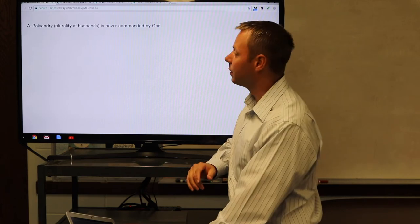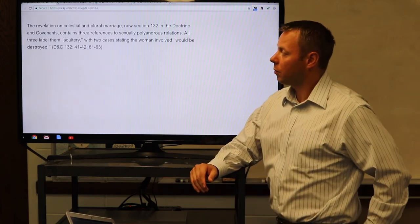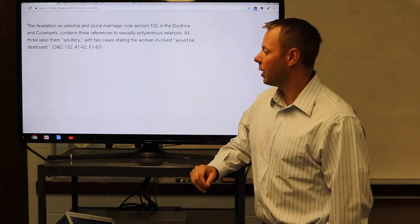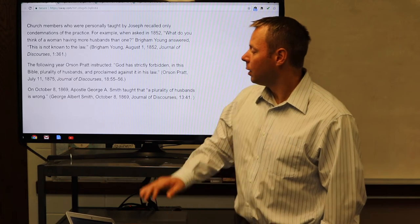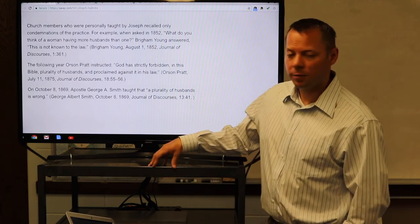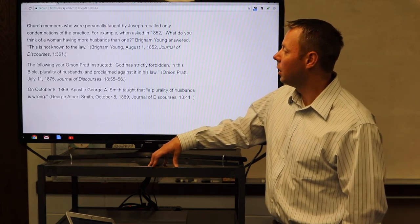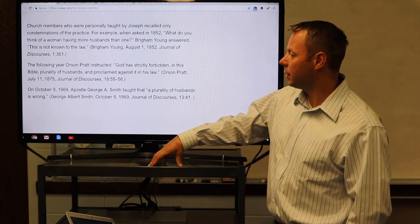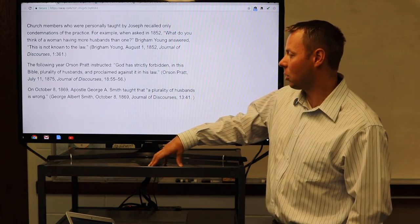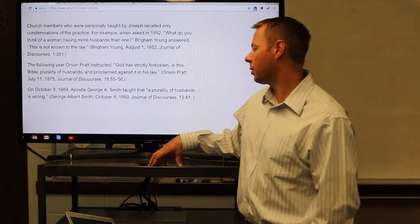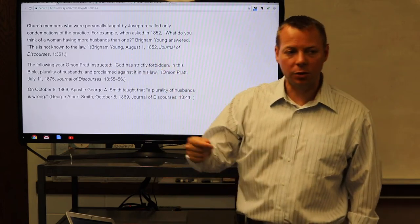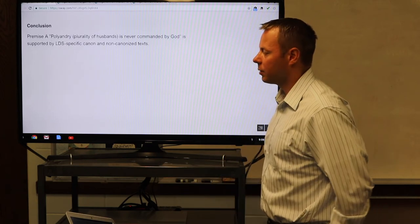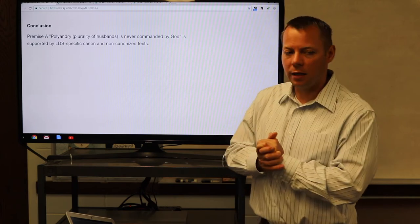How about Premise A? Polyandry, or plurality of husbands, is never commanded by God. The revelation on celestial and plural marriage, now section 132, contains three references to sexually polyandrous relations. All three labeled them adultery. With two cases stating that the woman involved would be destroyed. Church members who were personally taught by Joseph recalled only condemnations of the practice of polyandry. When asked in 1852, what do you think of a woman having more husbands than one? Brigham Young answered: This is not known to the law. The following year, Orson Pratt instructed: God is strictly forbidden in this Bible, plurality of husbands, and proclaimed it against his law. Premise A, polyandry, or plurality of husbands, is never commanded by God, is supported by LDS-specific canon and non-canonized texts.